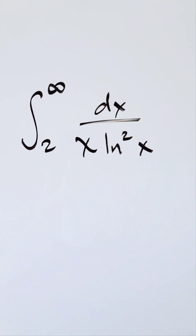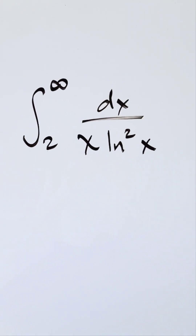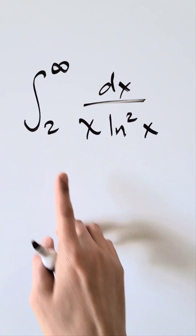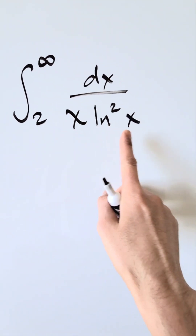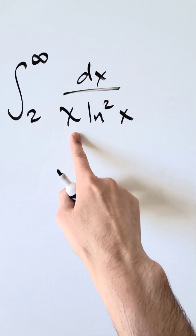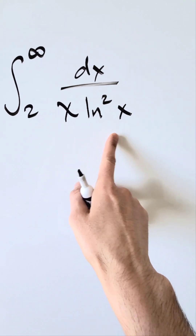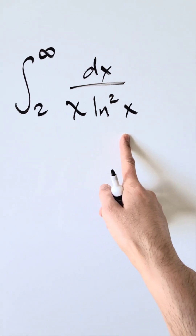Let's have fun and solve this. Type 1 improper integral: integral from 2 to infinity of dx over x times natural log squared x.